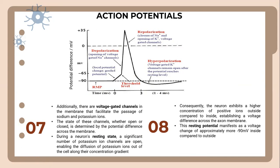Additionally, there are voltage-gated channels in the membrane that allow the passage of sodium and potassium ions. The state of these channels — whether open or closed — is determined by the potential difference across the membrane. During repolarization, the potential difference returns toward the resting level, and potassium ion channels open.